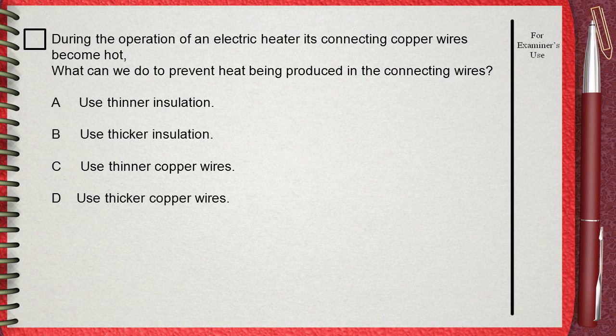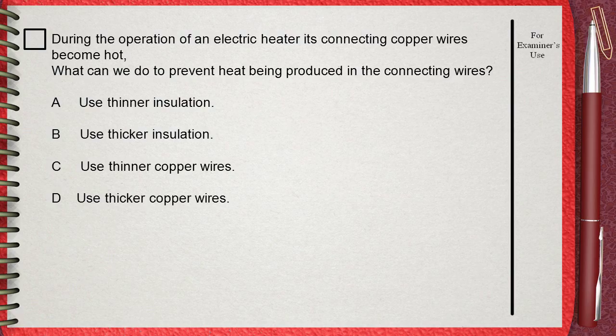During the operation of an electric heater, its connecting copper wires become hot. What can we do to prevent heat being produced in the connecting wires? A: Use thinner insulation, B: Use thicker insulation, C: Use thinner copper wires, or D: Use thicker copper wires. To answer this question,